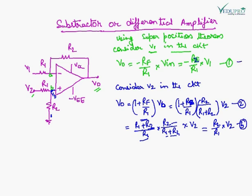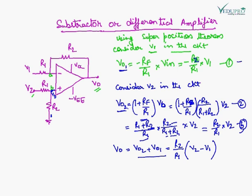Using equation 1 and equation 2, there are two V_out values. V_out 1 is when V1 is considered and V2 is not. Now finding the total output: the output is the sum of both outputs, and finally we get a result that is the difference between the two inputs — the output is proportional to the difference between the two inputs.